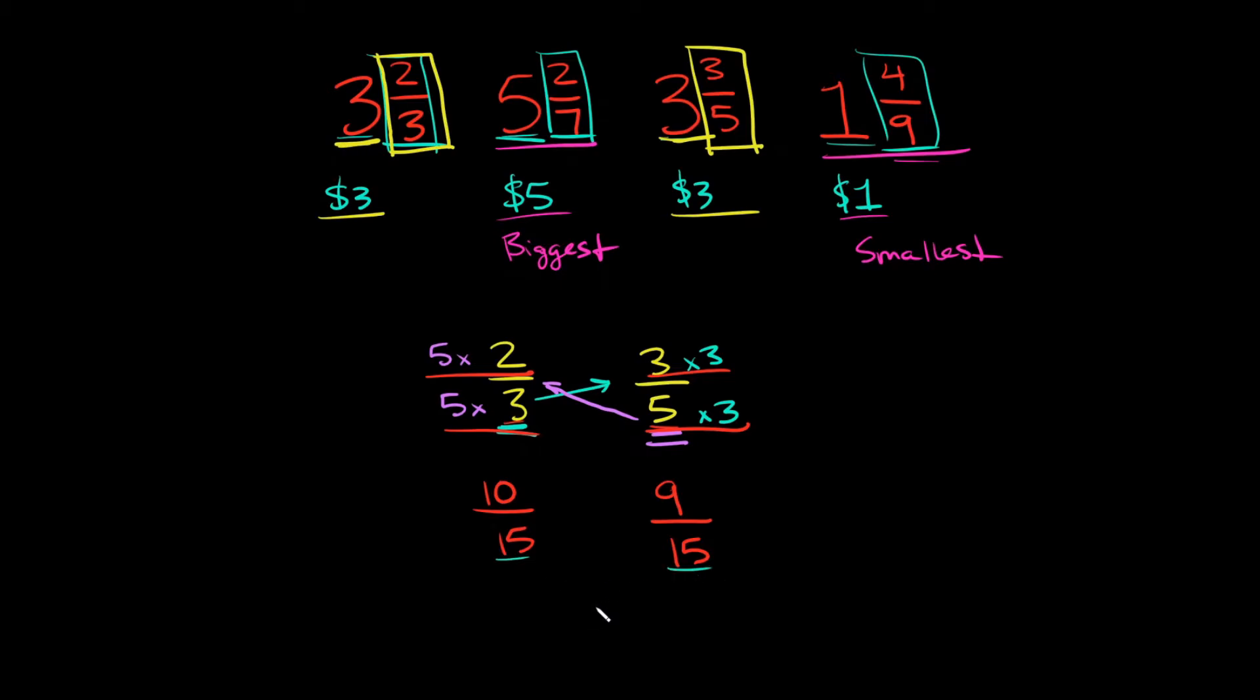So to compare these two, all we have to do is compare their numerators. So 10 and 9. So which one is bigger? Well, 10 over 15 is bigger than 9 over 15. But remember, 10 over 15 is actually 2 over 3. So we'll write it down here, 2 over 3. And then 9 over 15 is actually 3 over 5. 3 over 5. So we'll write that down here. So that means 2 over 3 is bigger than 3 over 5.